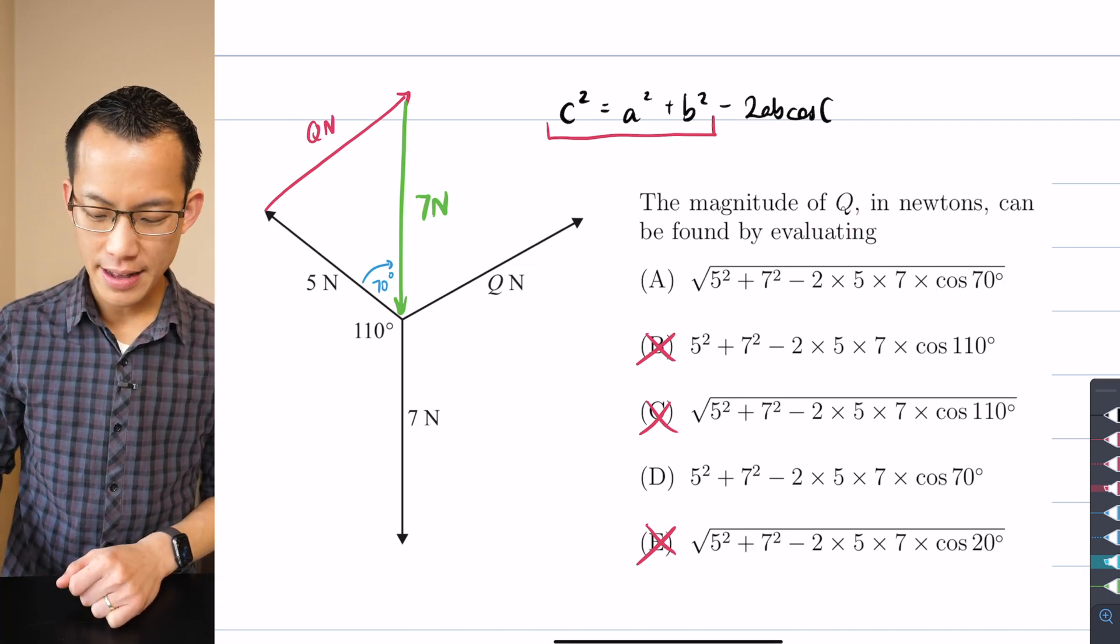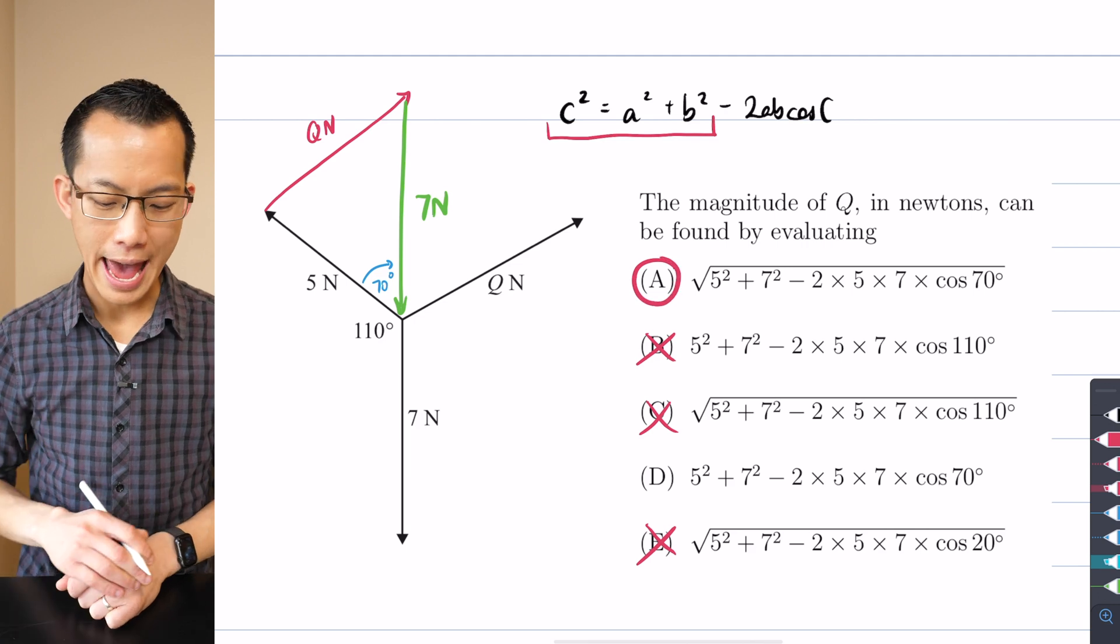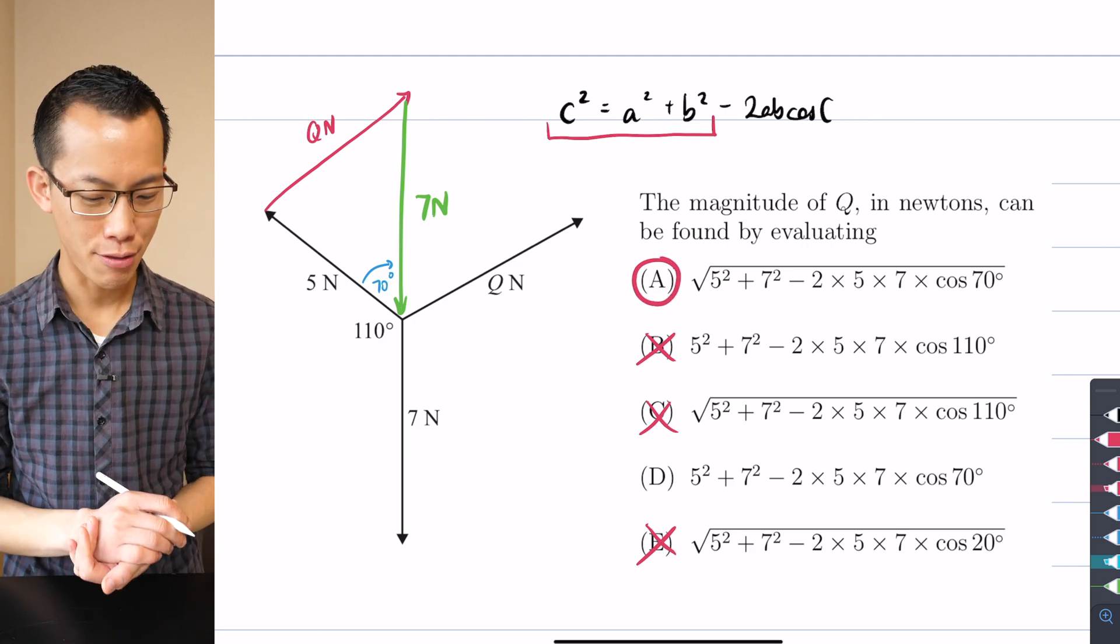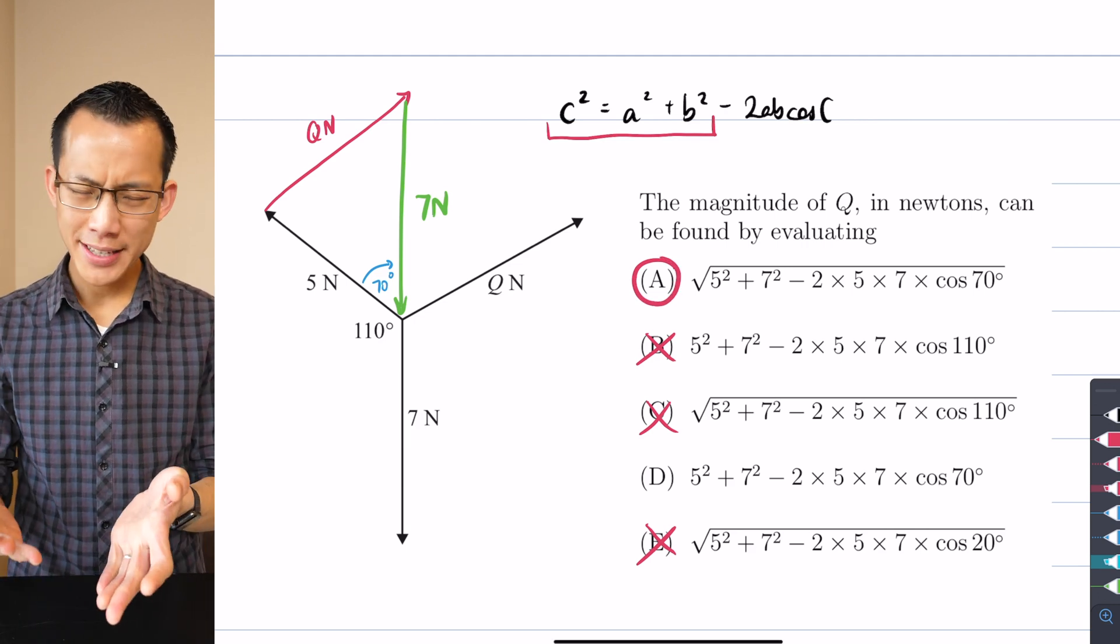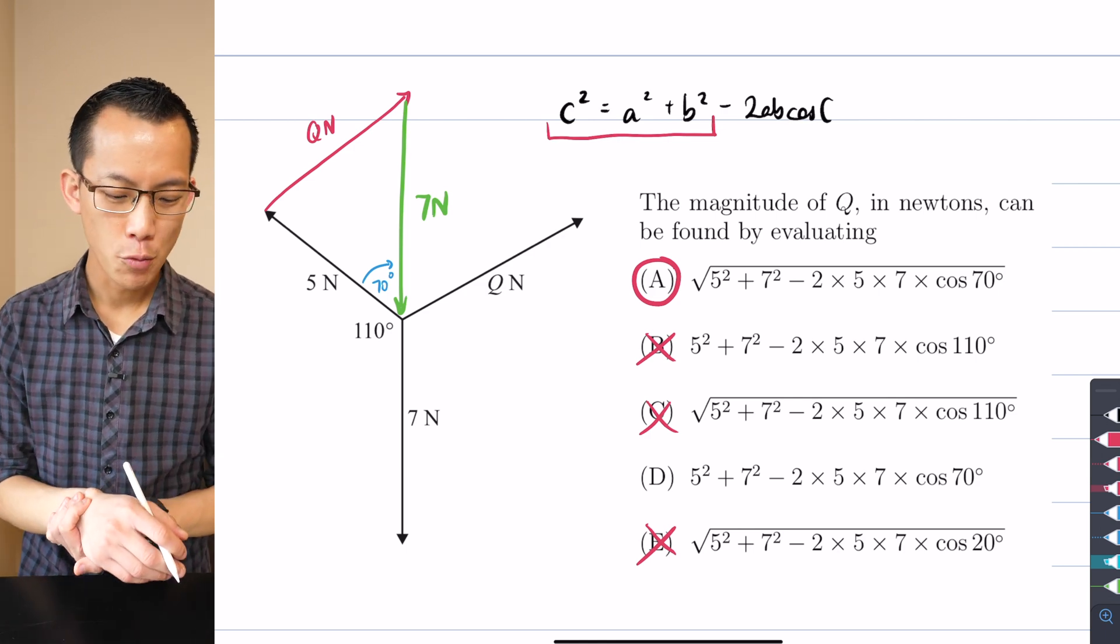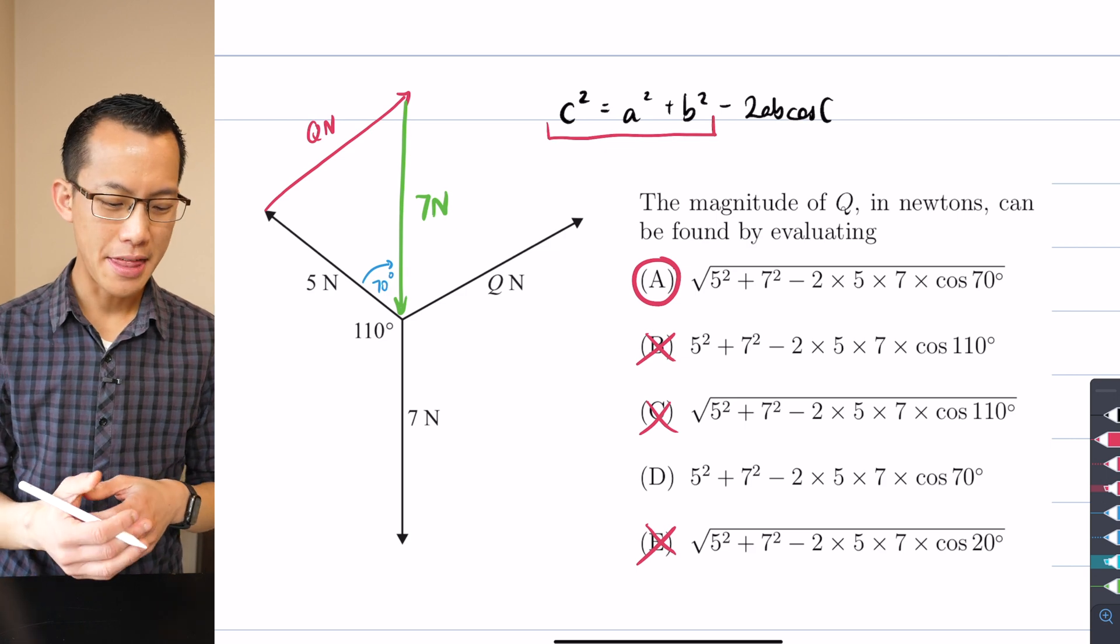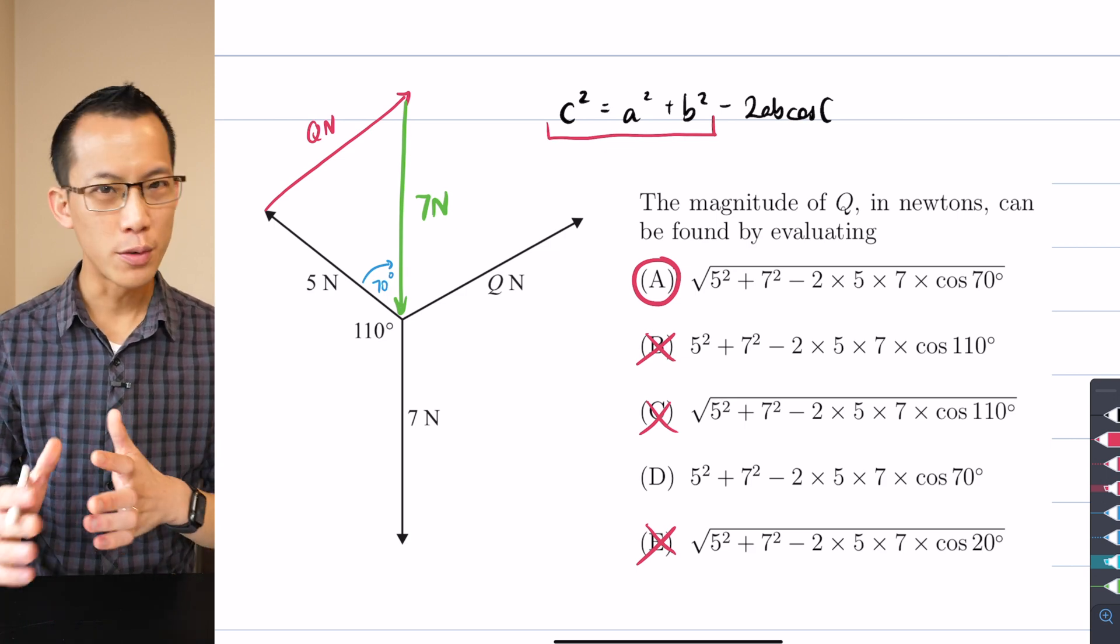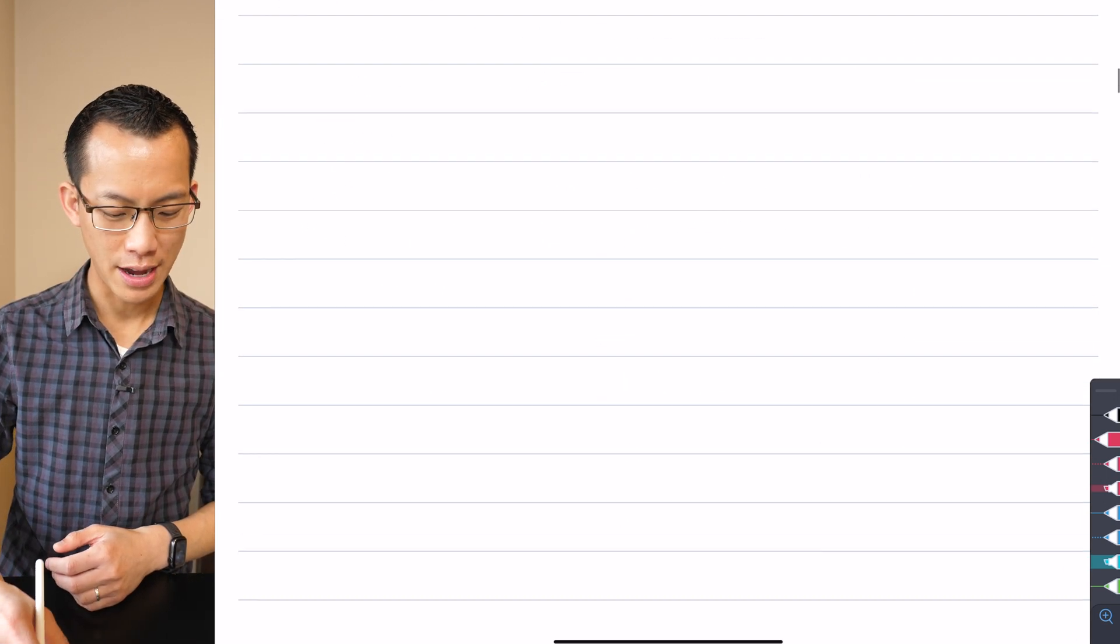If what I want is not Q squared but Q, then I need to take the square root of both sides and that's going to give me option A. That's how I reasoned through this, I hope that makes sense. This is a very simple example, let's now push on this a little further when you've got concurrent forces.